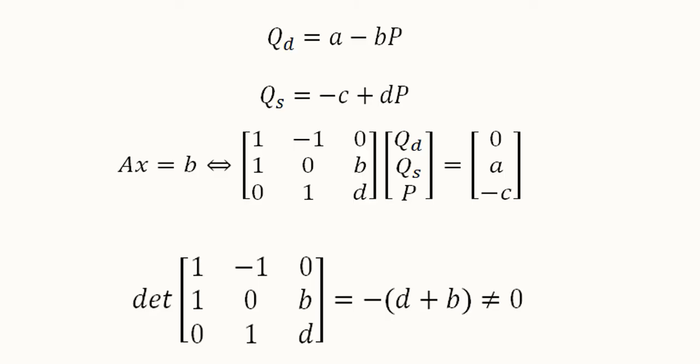We can write this system in the standard way where we have a coefficient matrix which is known as A, we have x which is the matrix of the variables involved in the system of equations, and b is the matrix of the constants.